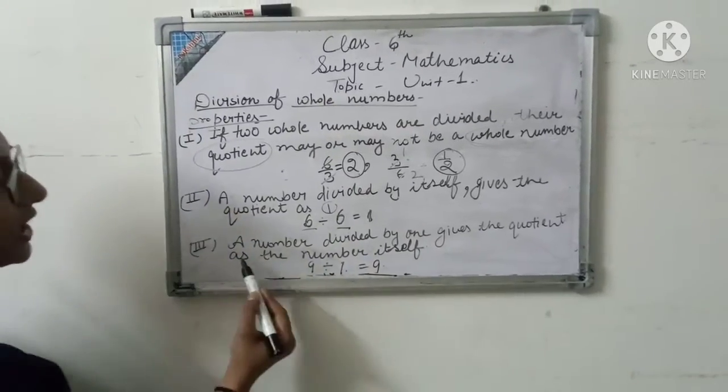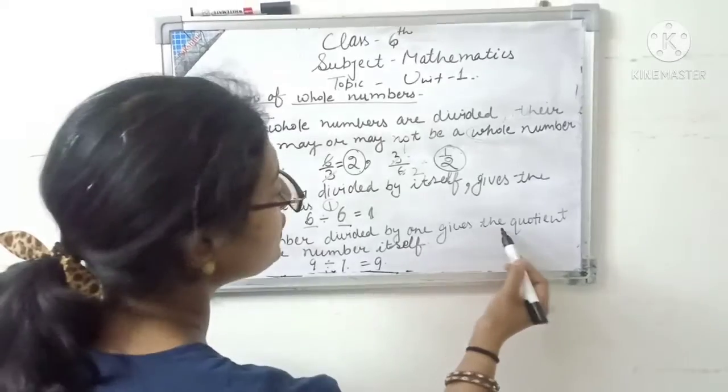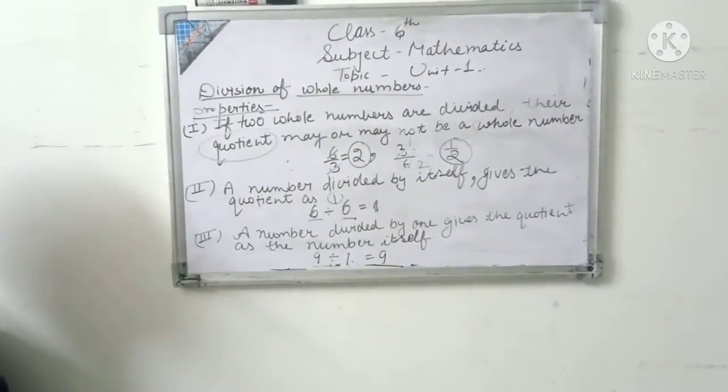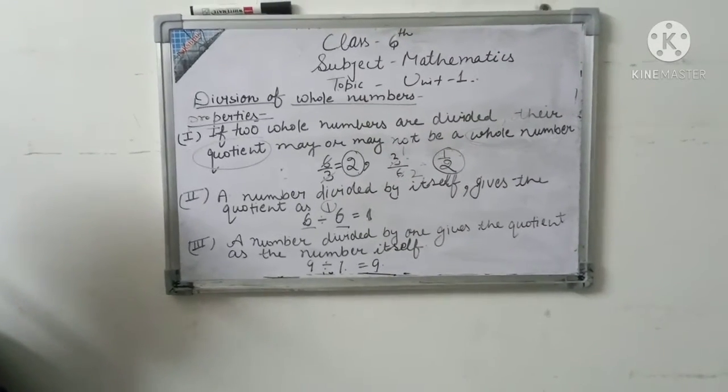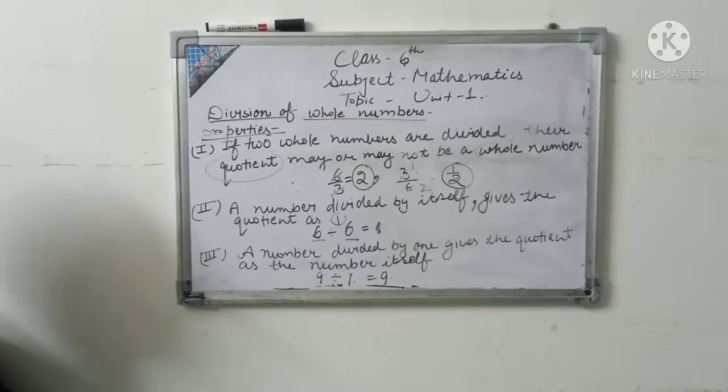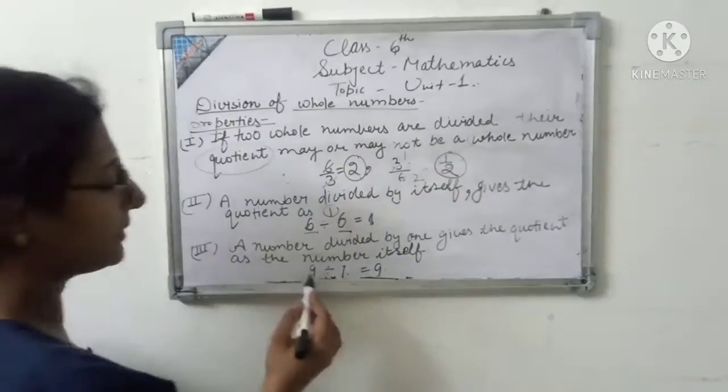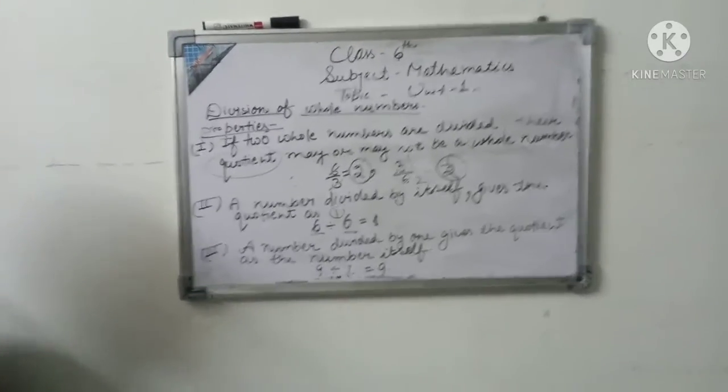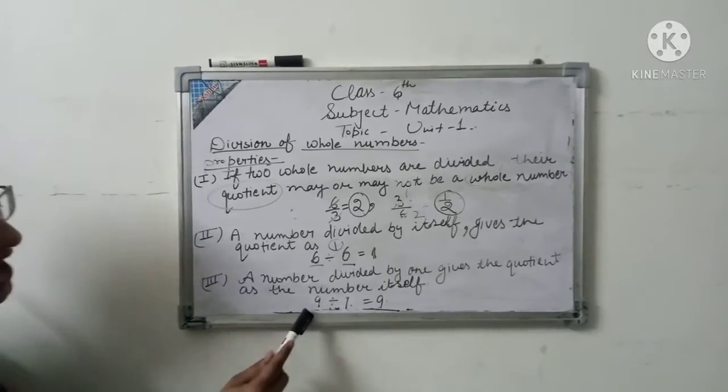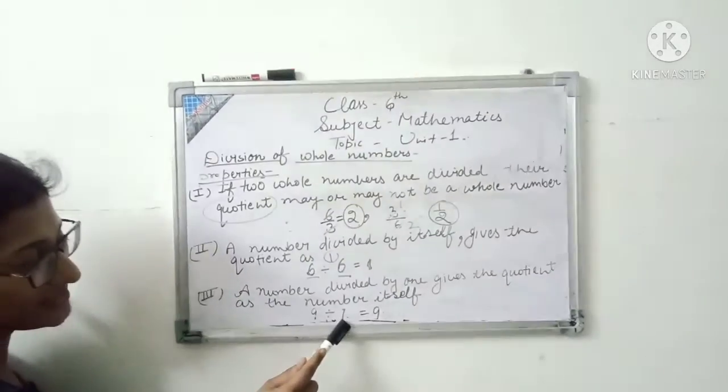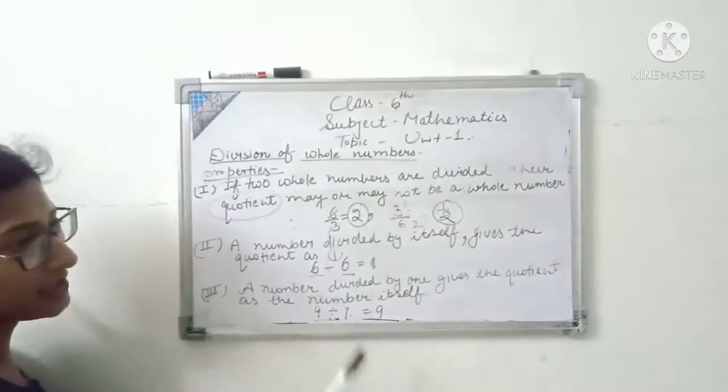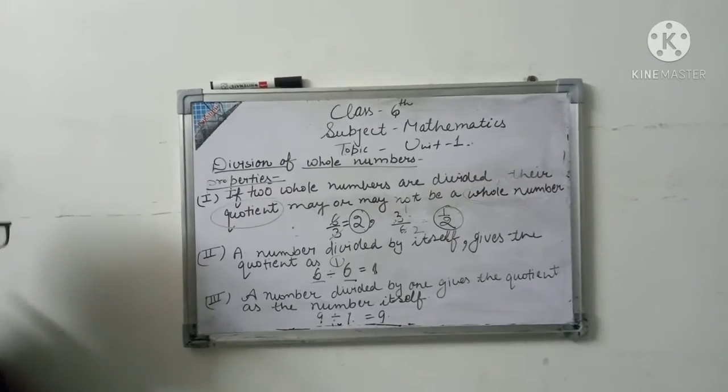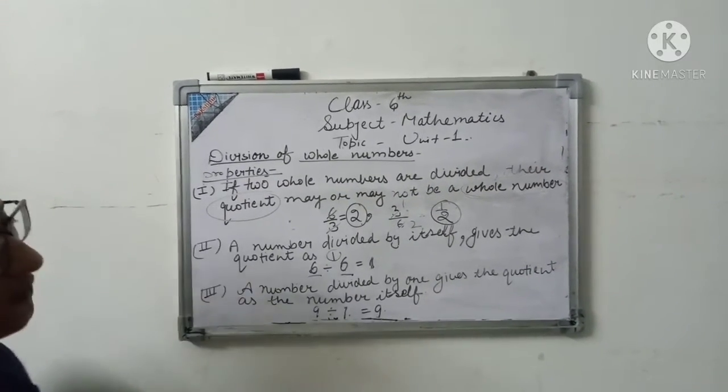Third property: a number divided by 1 gives the quotient as the number itself. If we divide any number by 1, the quotient is the number itself. For example: 9 divided by 1 equals 9, 6 divided by 1 equals 6, 4 divided by 1 equals 4. Clear?